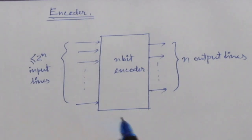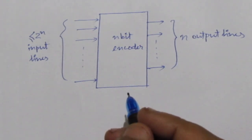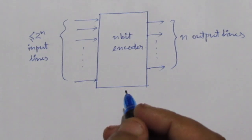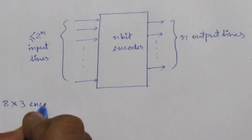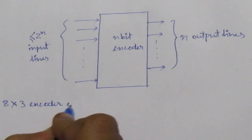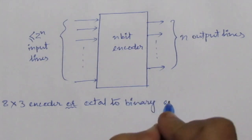So, we can consider a 8 to 3 encoder circuit or we may say that octal to binary encoder. 8 into 3 encoder or octal to binary encoder. We will consider this example.